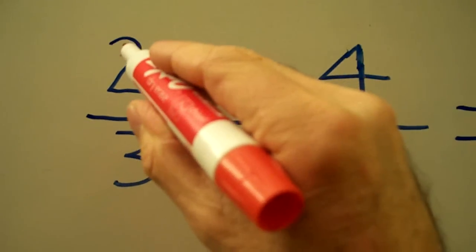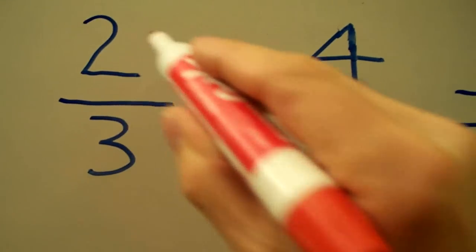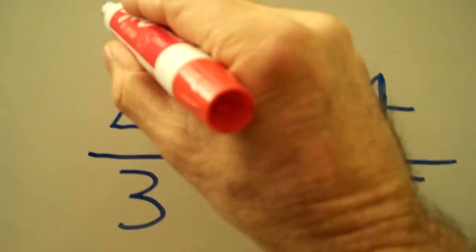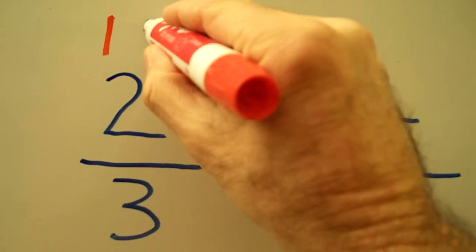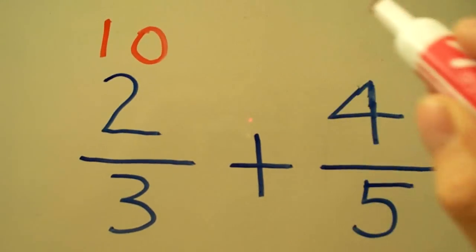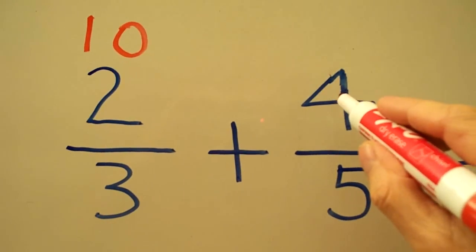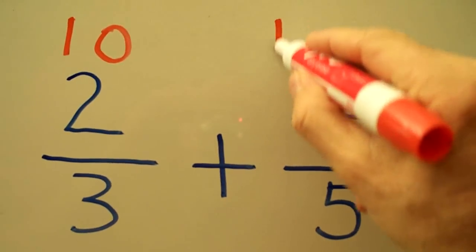Next we start at the top left and multiply two with five to get ten. Next we multiply the four with the three to get twelve.